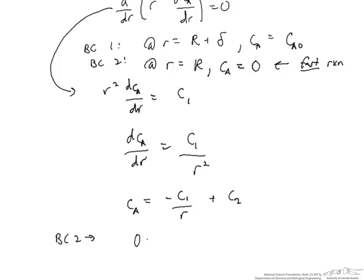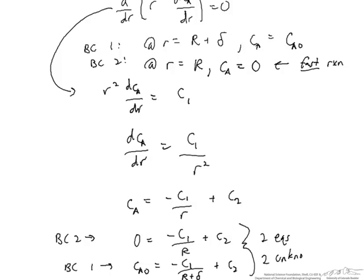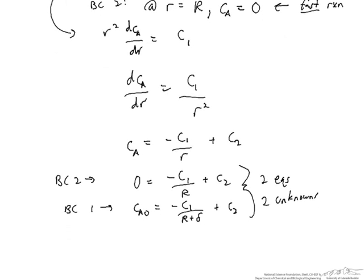We now use our boundary conditions to plug in for values of CA at known values of r. So 0 is equal to negative C1 over capital R plus C2. Use boundary condition 1 for the outer boundary condition at R plus delta. This gives us two equations and two unknowns, where our unknowns are C1 and C2. And so we just have to solve for those. I won't go through the details of that simple algebra, and just I'll write down the results for C1 and C2.